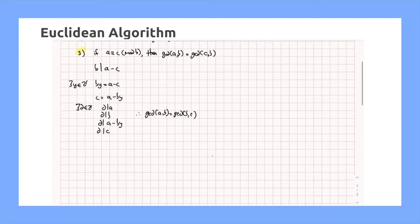In order to compute the GCD of A and B, we can simply get that A is equal to BQ1 plus R1, where R1 is less than B.